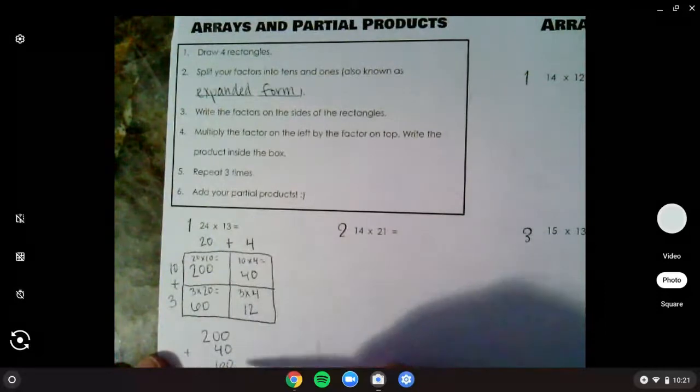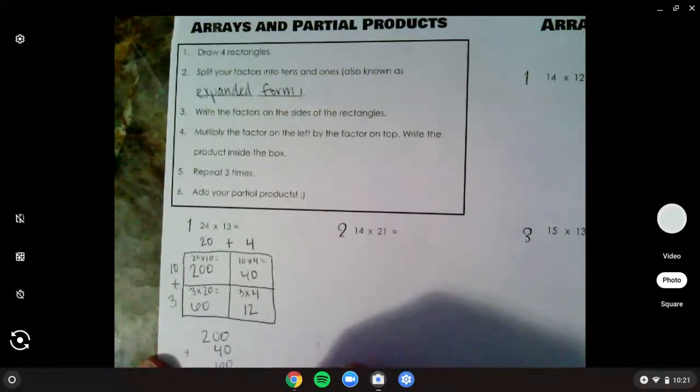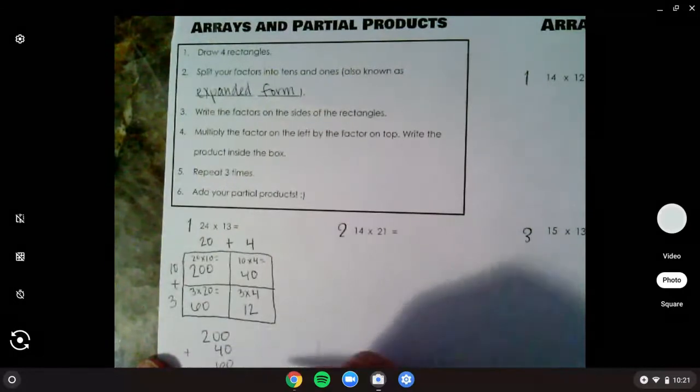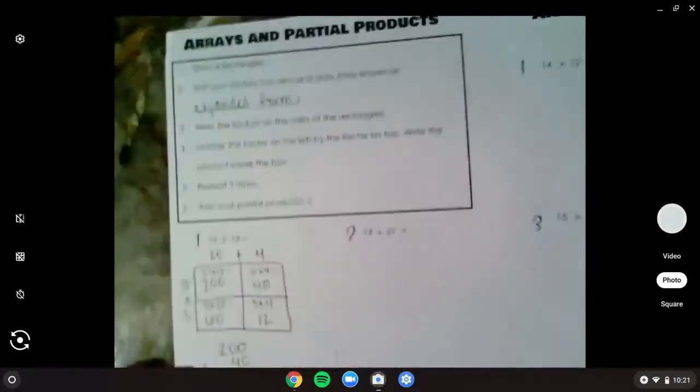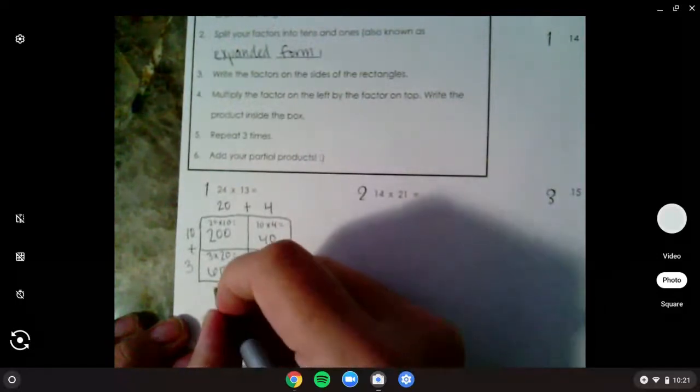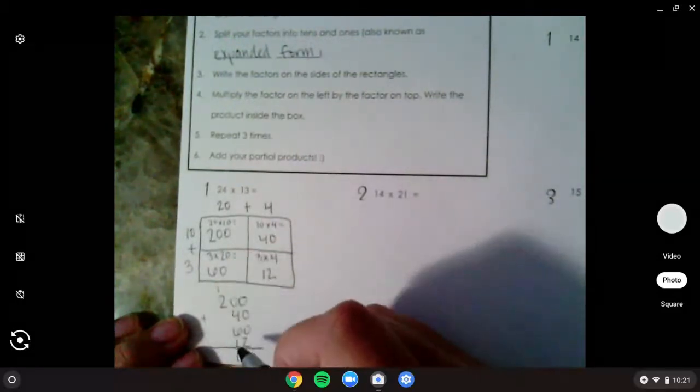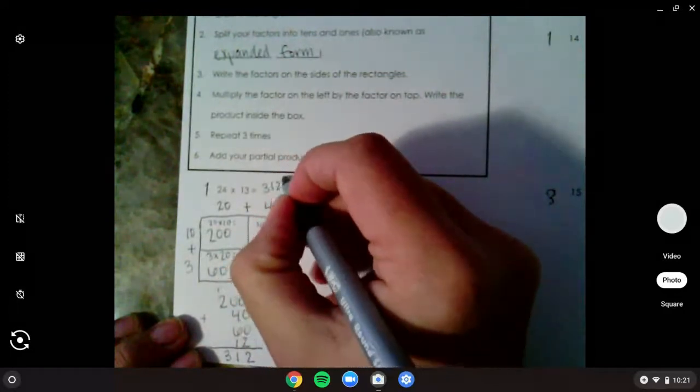Now I always want to add from ones to hundreds, right? 0, 0, 0, 2 is 2. 4, 6, 1. Let's see, 6 plus 4 is 10. There we go. 6 plus 4 is 10. And one more is 11. 1 plus 2 is 3. So my product is 312.